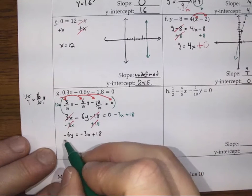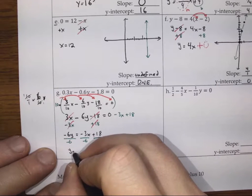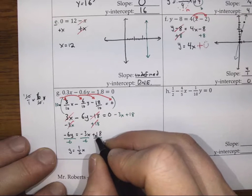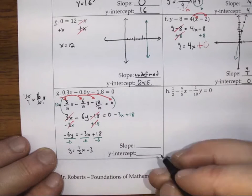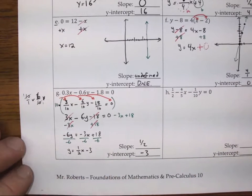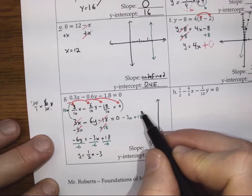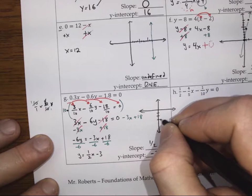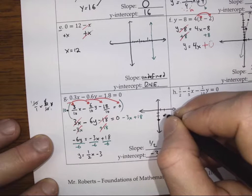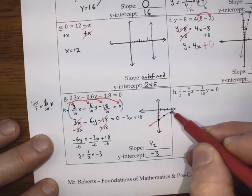Then we divide by negative 6. That gives y on the left equal to negative 3 over negative 6, which is 1/2 x, and 18 over negative 6 is negative 3. So we get a slope of 1/2 and a y-intercept of negative 3. That looks like a line starting at negative 3, rising 1 over 2.